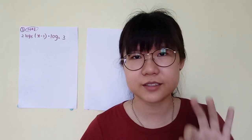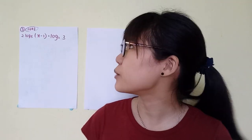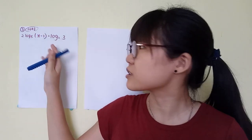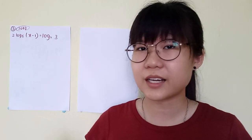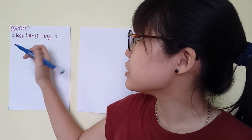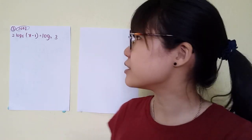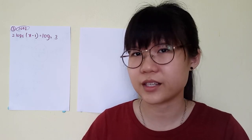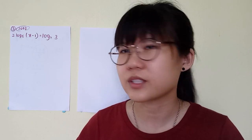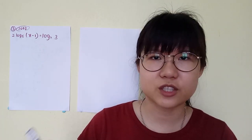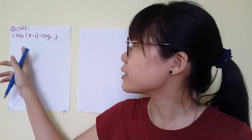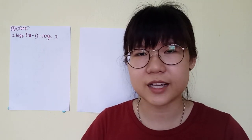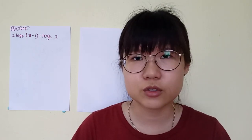The third type of log question involves solving for X with a change of basis. This is a 2008 past year question and is a bit tougher. Before starting, you have to analyze the question — the three numbers involved are 5, 2, and 3. Unlike having 3 and 9 where you can change to base 3, there's nothing in common between 5, 2, and 3, so the only way to solve this is to change everything to log 10.